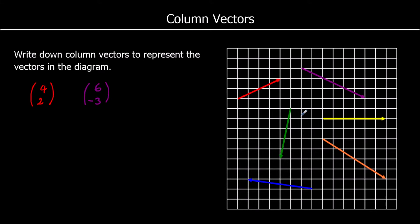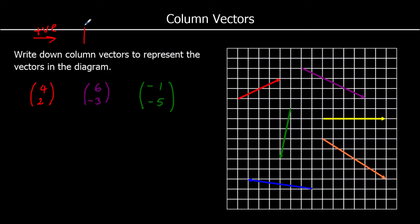This green vector goes back to the left 1, and then down 1, 2, 3, 4, 5. So to show it's going to the left instead of the right, we say that's negative 1. And to say it's going down instead of up, we say negative 5. So whenever we go to the right or up, it's positive. And if we go to the left or down, that's negative.